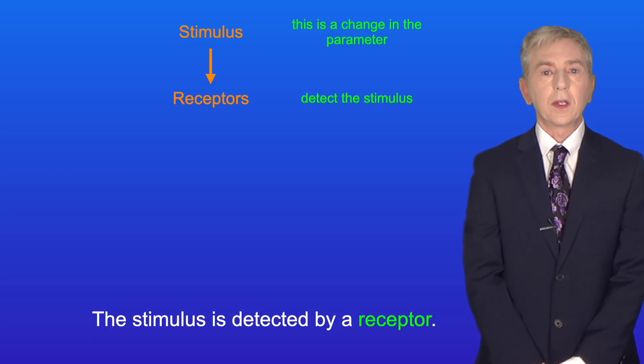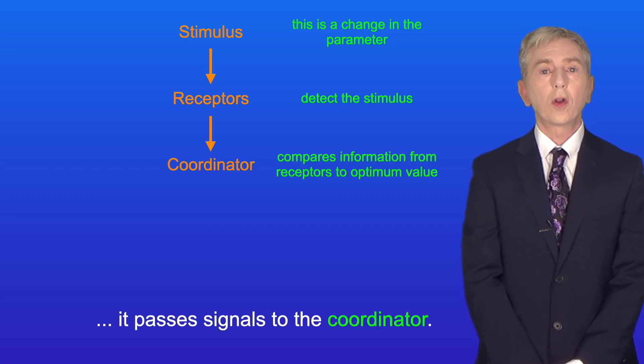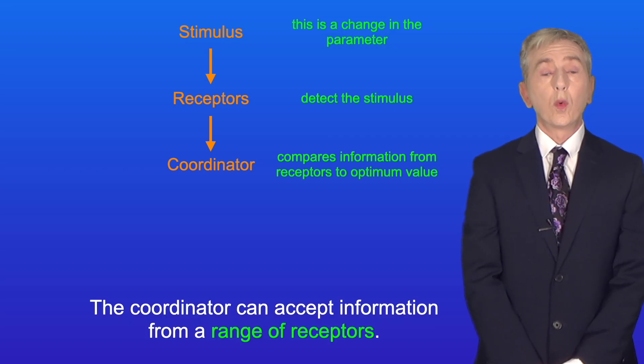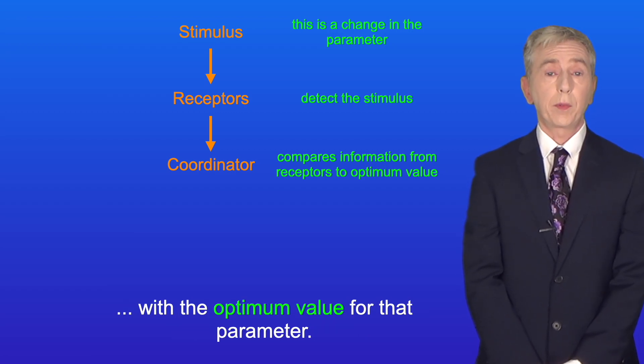The stimulus is detected by a receptor. When the receptor detects a stimulus, it passes signals to the coordinator. Now the coordinator can accept information from a range of receptors, and the coordinator compares the value from each receptor with the optimum value for that parameter.